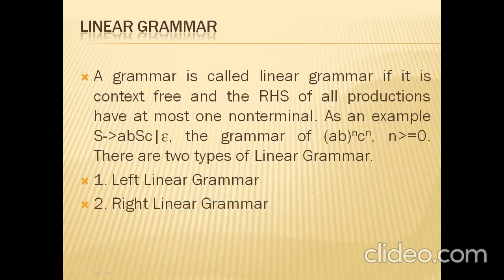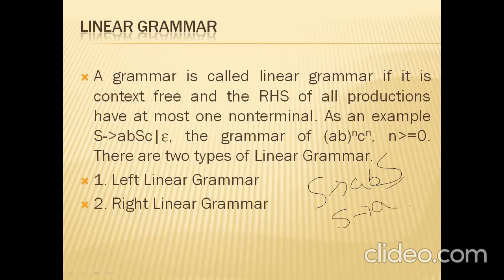For example, consider S tends to A, B, S. This production contains only one non-terminal. So S tends to A, B is also correct. Why? Because they say at most one non-terminal — so it may contain one or may not contain any.